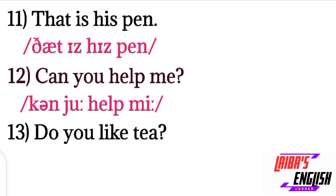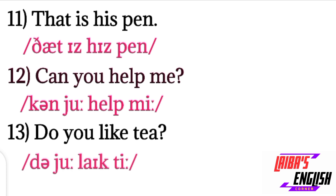Sentence twelve: Can you help me? K sound at the start, then a short 'a' vowel and N sound — 'can.' Then 'you': the 'j' sound and the long 'oo' sound. For 'help': H, short 'e,' L, P. For 'me': M sound and long 'ee' sound. Next sentence, thirteen: Do you like tea? — this one is for you to do by yourself.